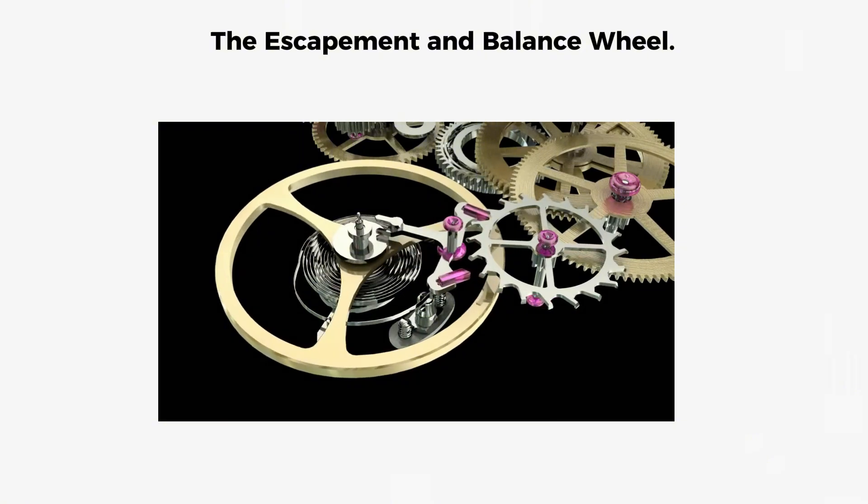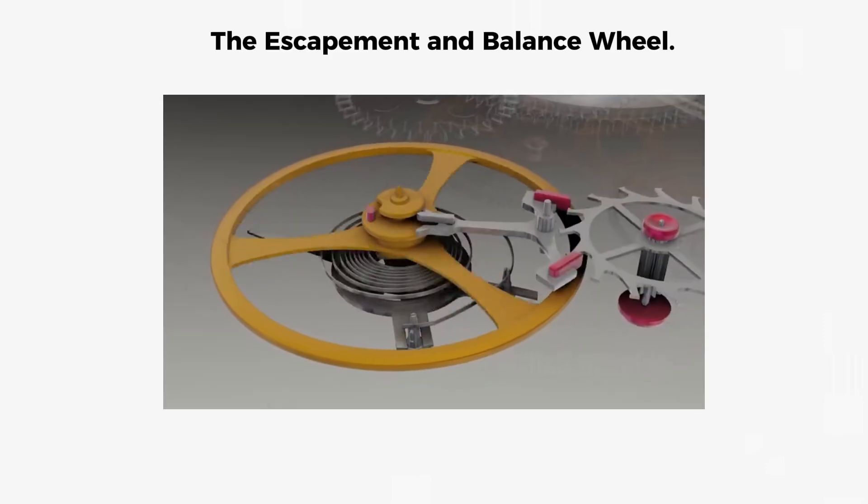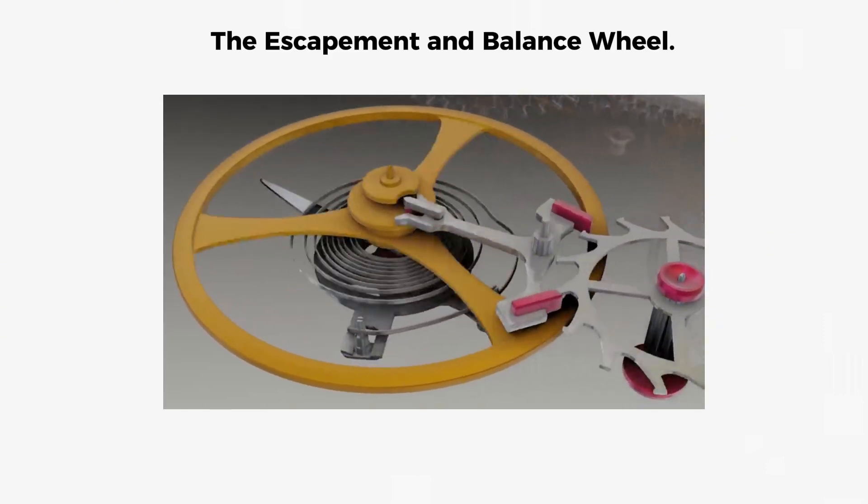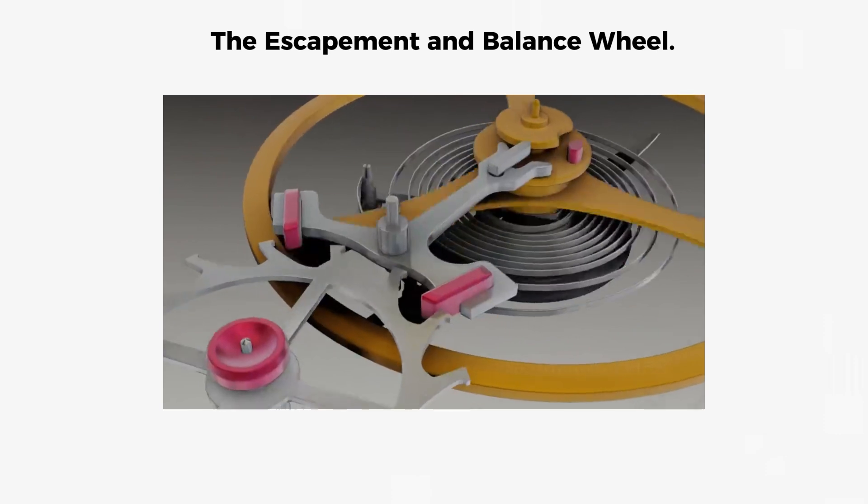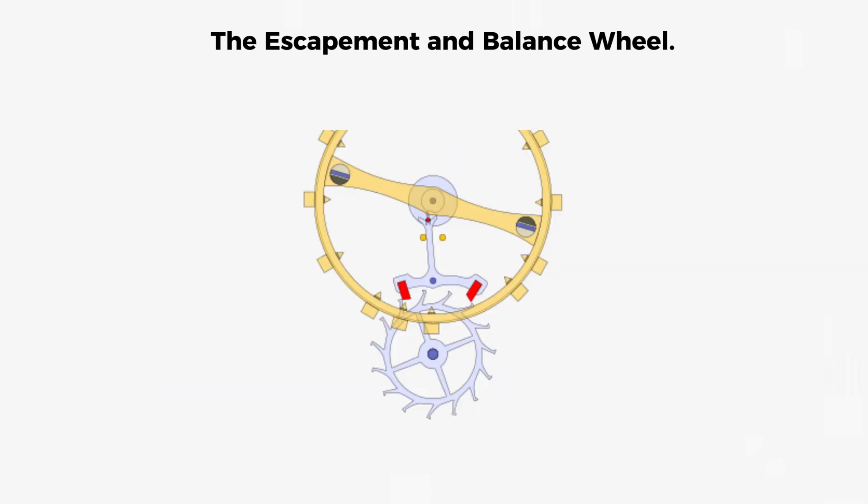Each time the fork moves, one pallet jewel releases an escape wheel tooth from its locked position. The instant the tooth slips free, its specially angled shape delivers a tiny push of power from the mainspring through the pallet fork, which then pushes the impulse pin and launches the balance wheel into another swing.